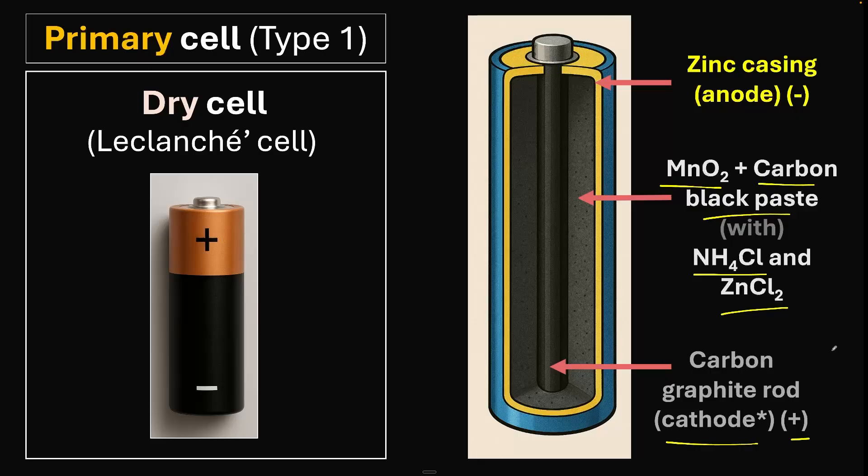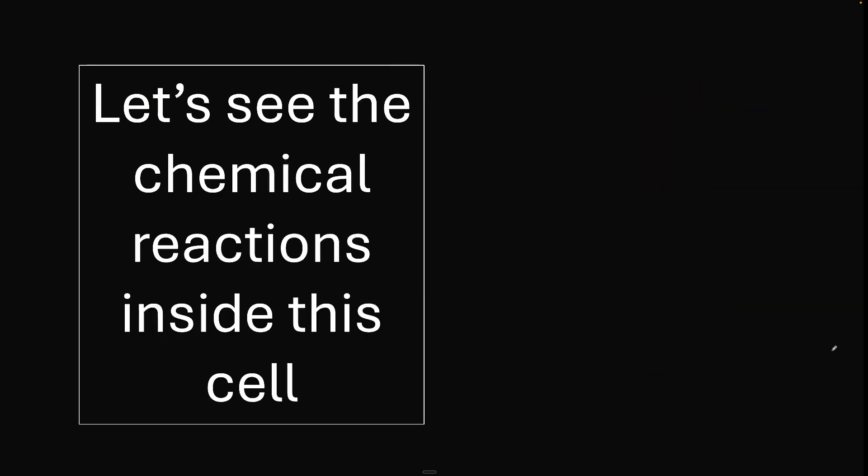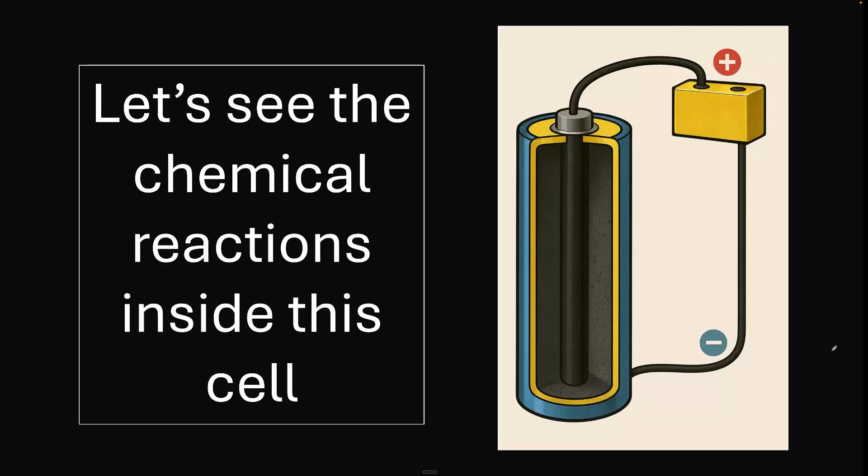Let's look at the reaction step by step. We need to connect the cell to an external circuit. If you have a normal double A battery, it doesn't start getting used up until you connect it to a device. Only when you connect it does it start getting used. For the reaction to start, you need to connect it to an external circuit.